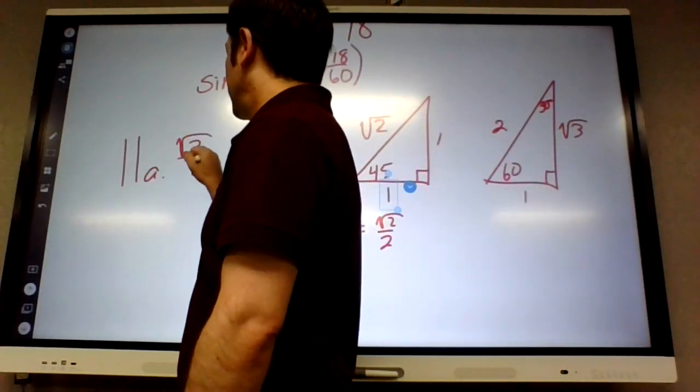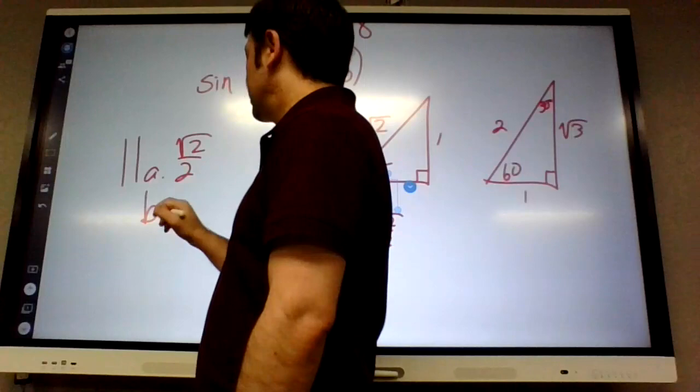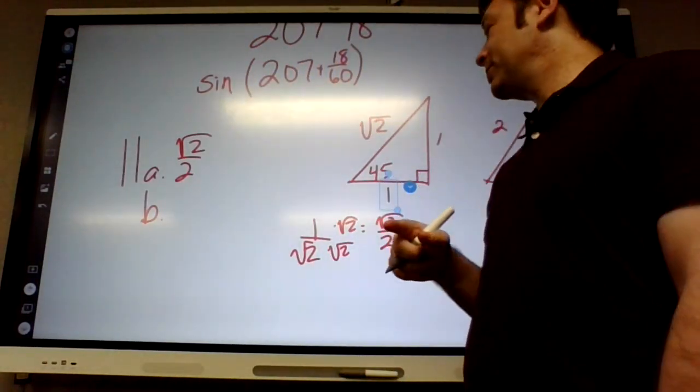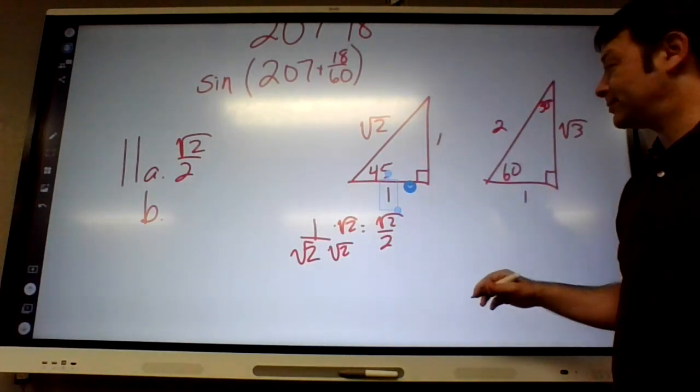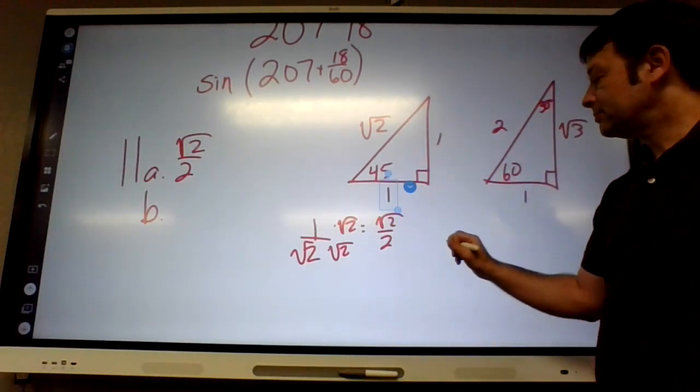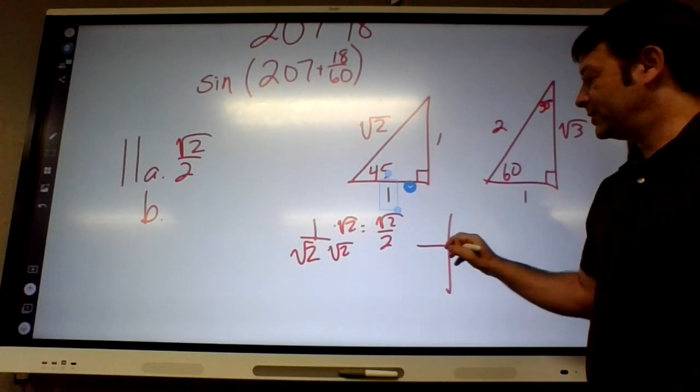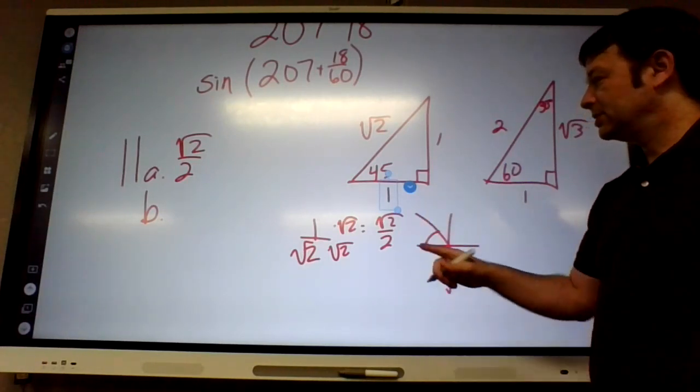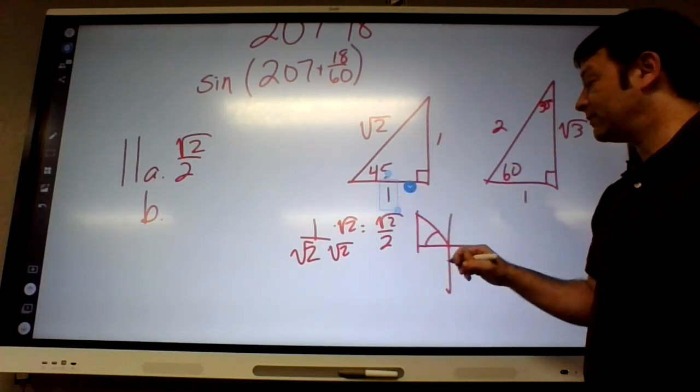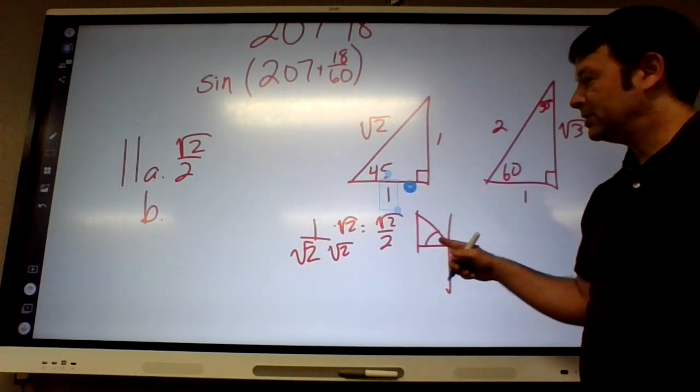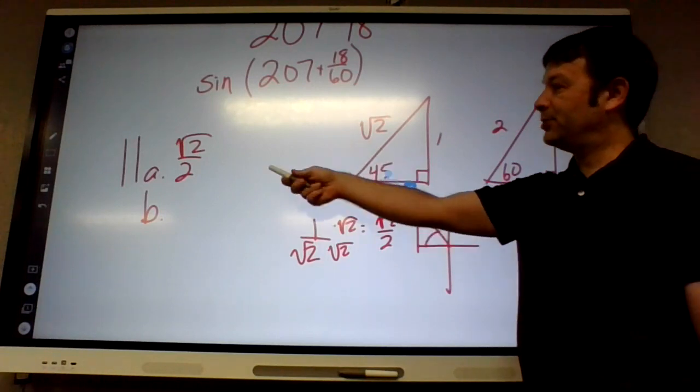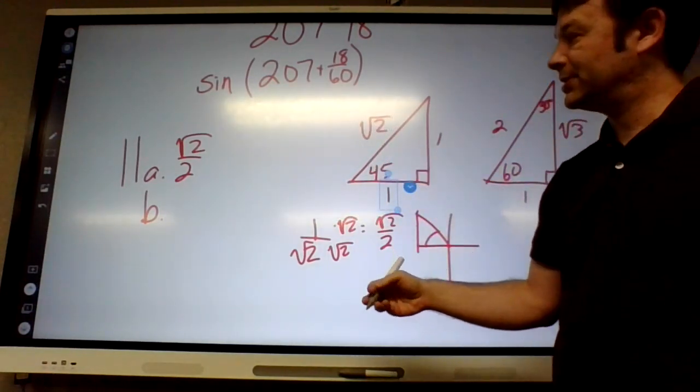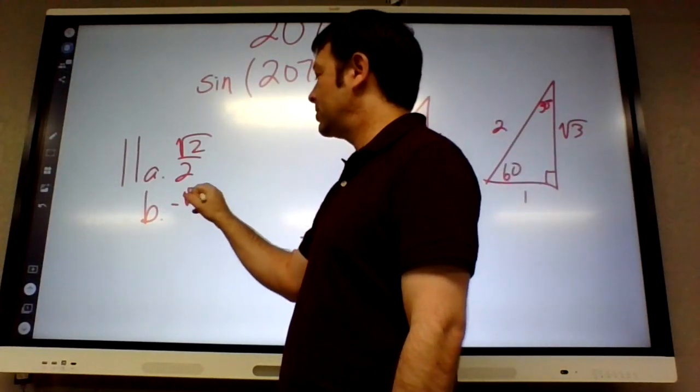So that's what they want. They don't want the decimal version, and they wanted to use special triangles to figure out. But B says cosine of 135. Well, what's 135's reference angle? 135 is 45 degrees short of 180. So it's basically a 45, 45, 90 again. So it's going to be square root of 2 over 2 again, except for cosine is negative in the second quadrant.